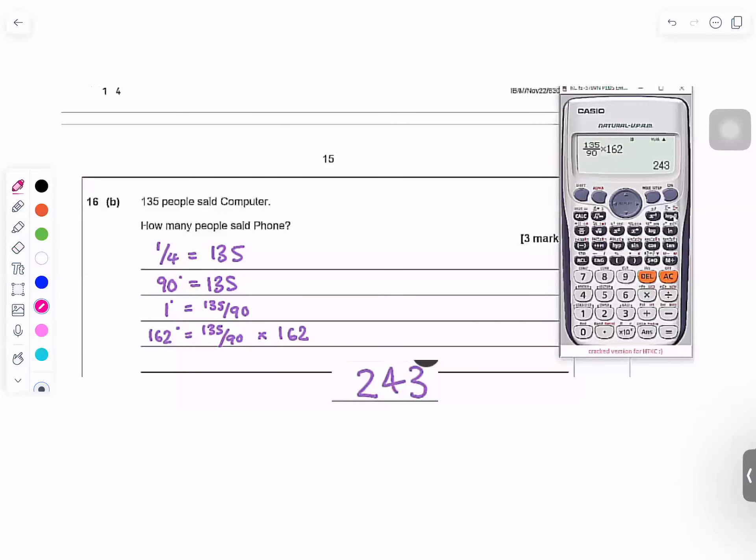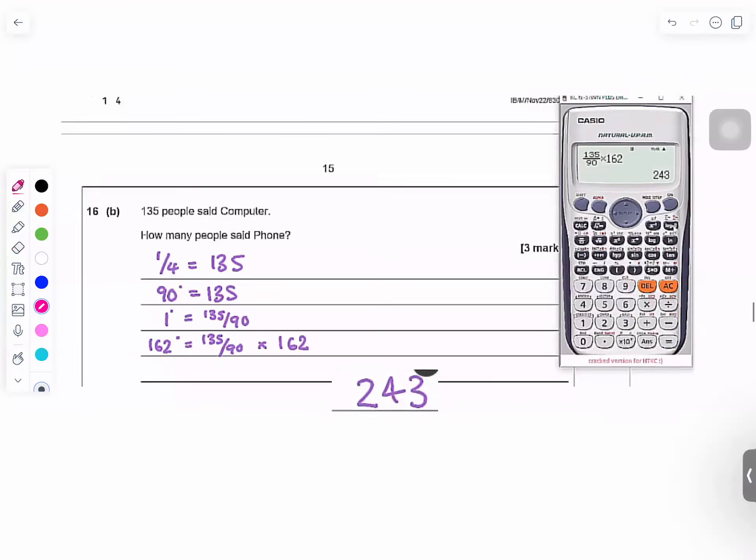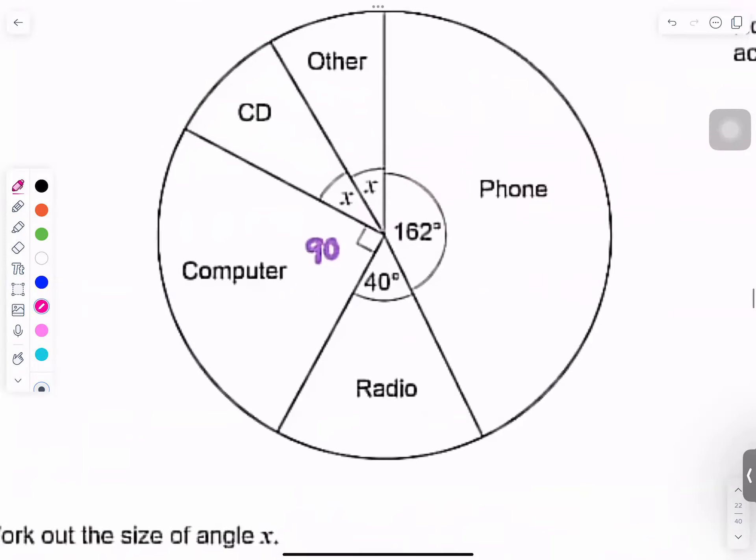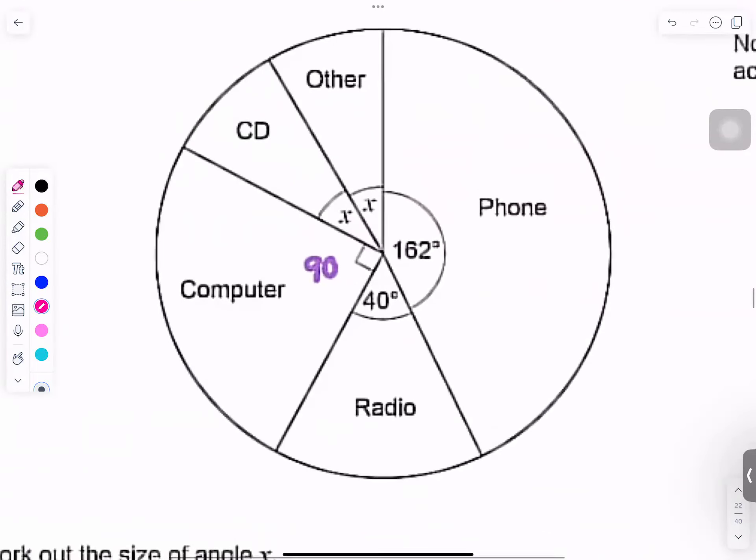It says 135 people said computer. How many people said phone? Let's look at the diagram. Look at the diagram for this section for computer.